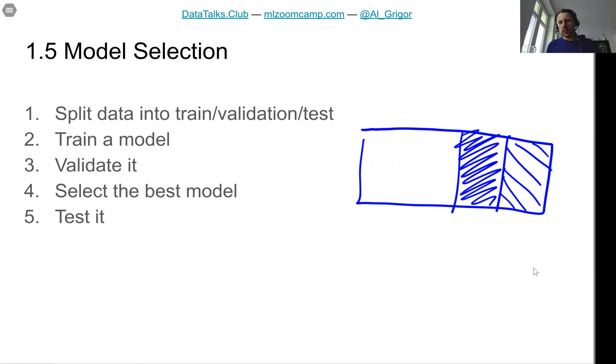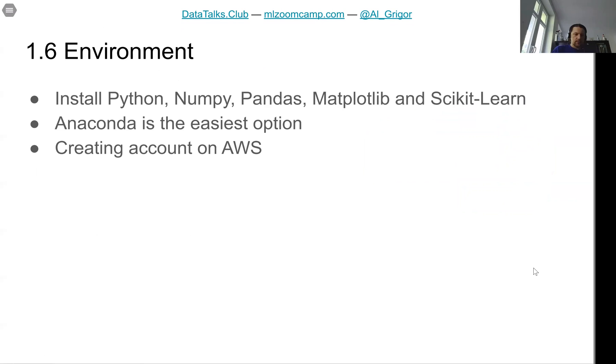Lesson six wasn't really a lesson, you just needed to install all the environment. For this course we need NumPy, Pandas, Scikit-Learn, Matplotlib, and the easiest option to get all of these is to install Anaconda. For those who are interested it's also possible to rent a server on AWS or other cloud providers and use it as well.